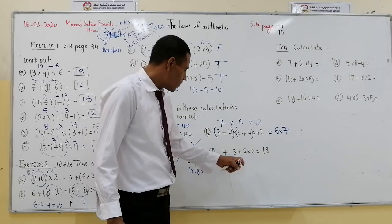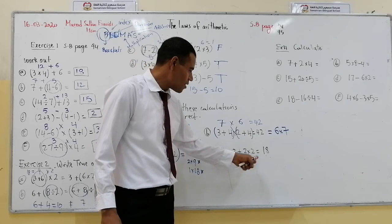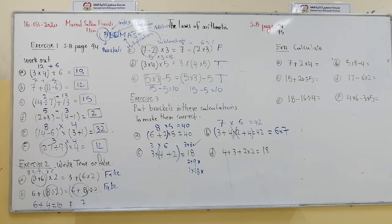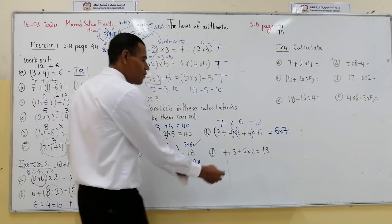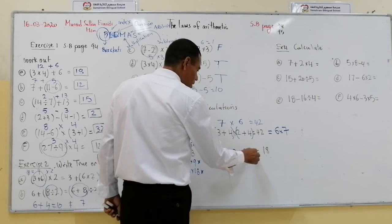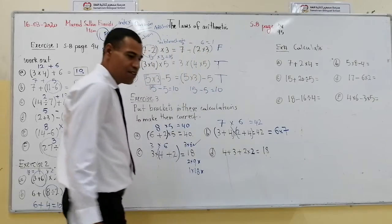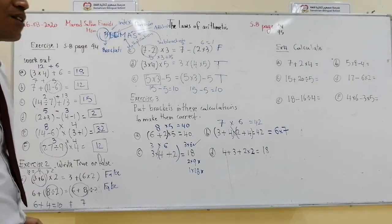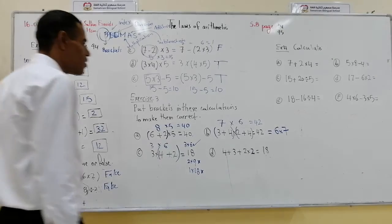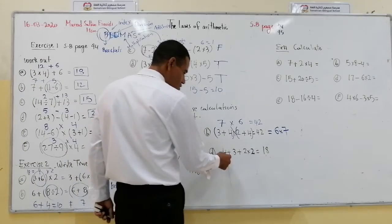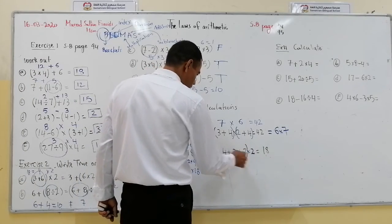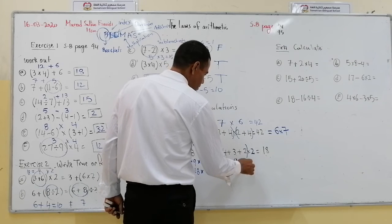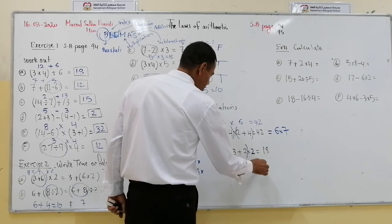Here we have 4 plus 3 plus 2 multiplied by 2 equals 18. Since we have a ×2, what is 18 divided by 2? It is 9. The total of these numbers gives 9: 4 plus 3 plus 2 equals 9. So (4 plus 3 plus 2) multiplied by 2 is 18.